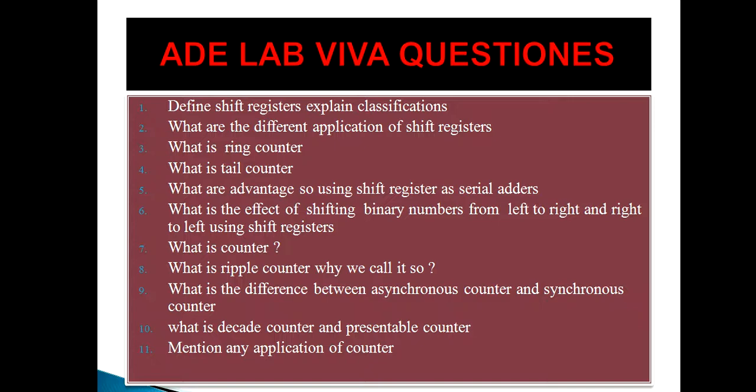A shift register can be used as a serial adder. We use the shift register to store the two numbers we want to add, and add them using just one full adder. Otherwise, to add a 4-bit number you would need 4 full adders. By using a shift register, you can reduce that to just 1 full adder.